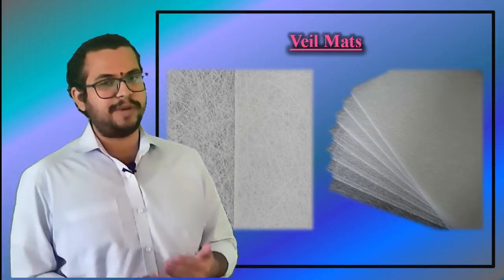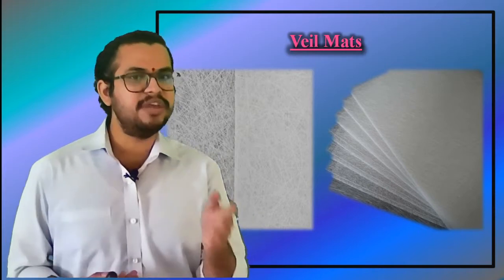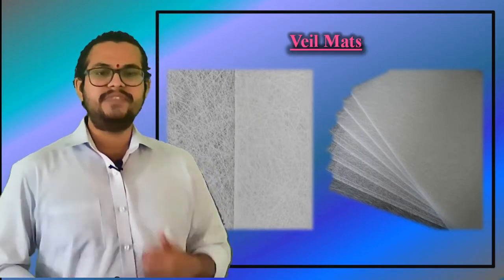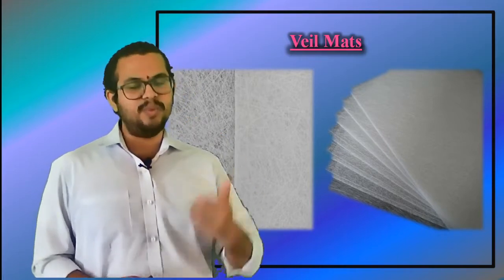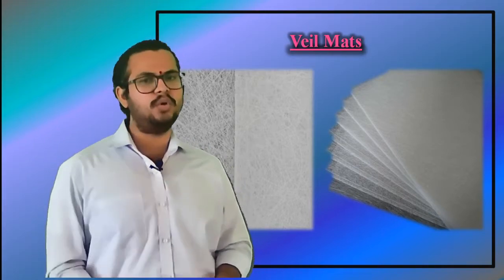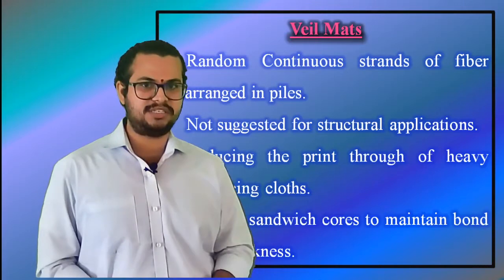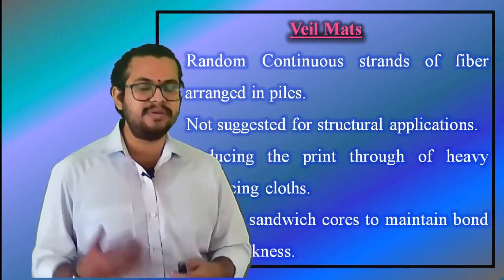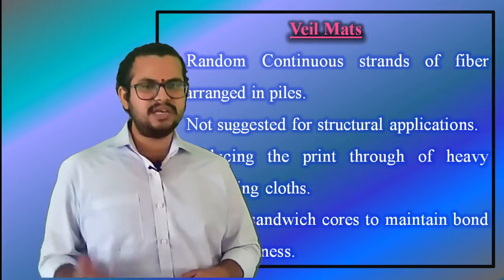Veil mats can be placed in the mold directly behind the surface coat to minimize the print-through of heavier reinforcing cloths. This thin outer layer also allows surface sanding of the finished parts without cutting into the reinforcing fabric below. Additionally, they are used with sandwich cores, placed over the core directly in order to maintain the ideal maximum bond line thicknesses. Veil mats can also keep excess resin from falling into the cells of honeycomb cores when a vacuum is not in use.